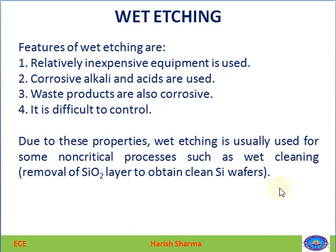Due to these properties, wet etching is used only for non-critical processes, like wet cleaning — that is, removal of the oxide layer to obtain a clean silicon wafer. Initially when we receive the silicon wafer, there is an SiO2 layer on one or both sides, so for the starting process wet etching may be used to remove that SiO2 layer.